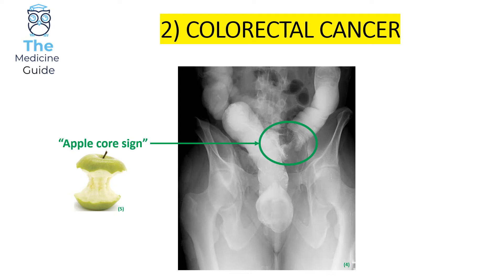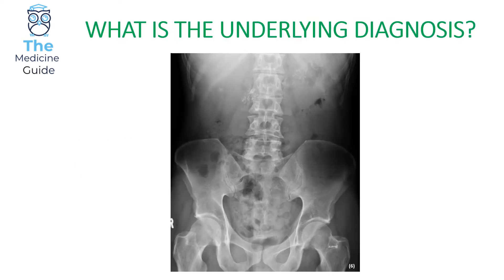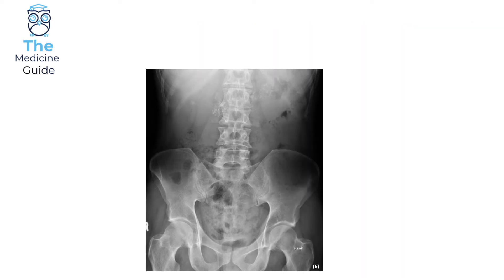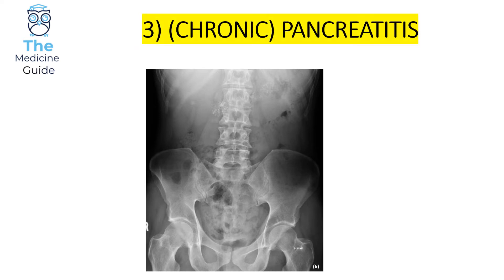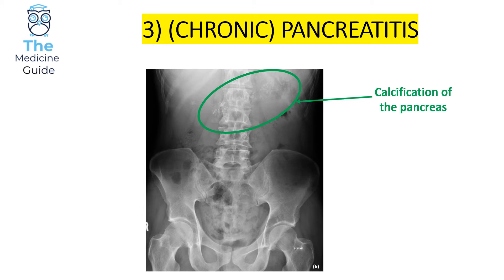Let's have a look at the next x-ray. This is actually quite a subtle finding — this example is of chronic pancreatitis. The key finding here is calcification of the pancreas, which almost looks similar to fairy dust along the margin of the pancreas. It's quite subtle, but hopefully after seeing this x-ray it will put you in good stead for the exam.